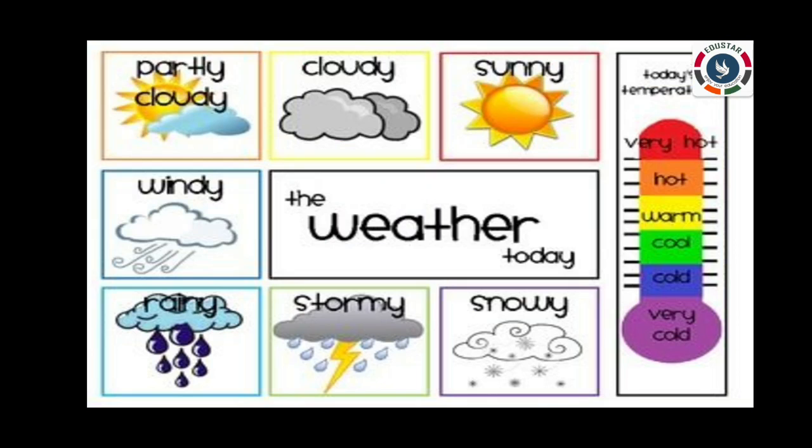The sun causes the changes in weather. The heat of the sun changes water from one form to another and also affects the movement of air. These changes in water and air bring about changes in weather.